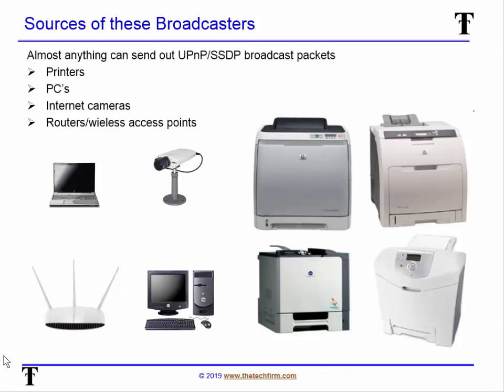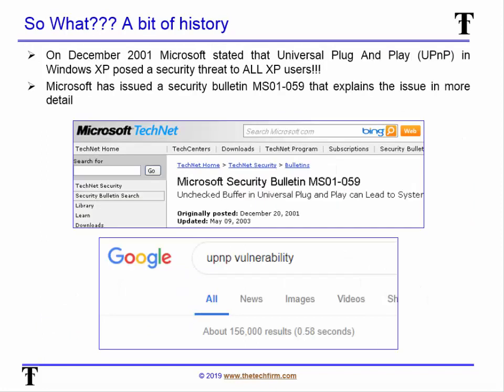A little history: back in 2001 Microsoft introduced UPnP and almost immediately issued a security bulletin saying it was a security threat to XP users at the time. People say 'who cares, that was a long time ago,' but as far as UPnP goes it's not just an XP issue — it's still an ongoing problem. If you go to Google and type 'UPnP vulnerability' you'll see a whole litany of issues, and as of today there are 156,000 results.